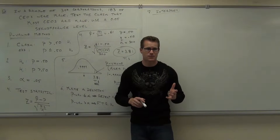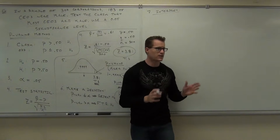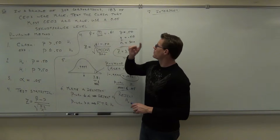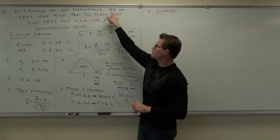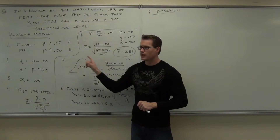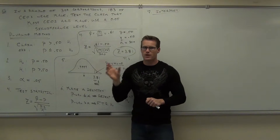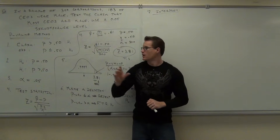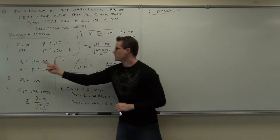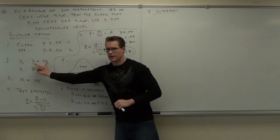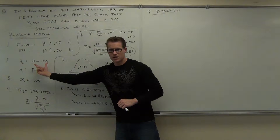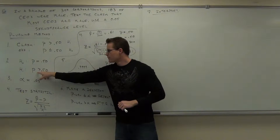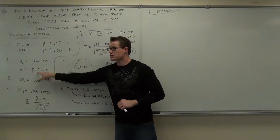Here's what this says in plain English: this says that the sample data is far enough away — rare enough — to prove the assumption incorrect. That's what it says. If the assumption is proved incorrect, the alternative is true.